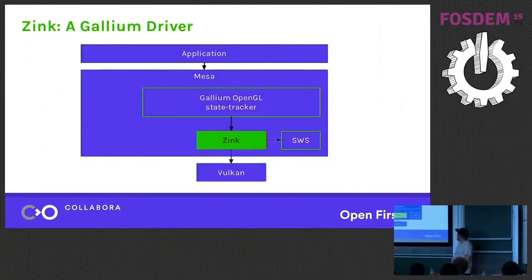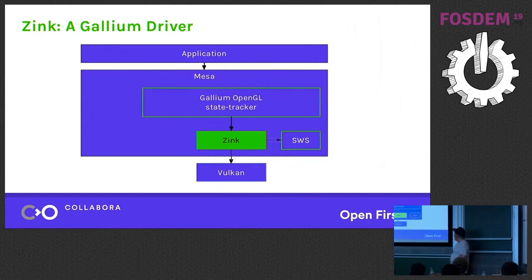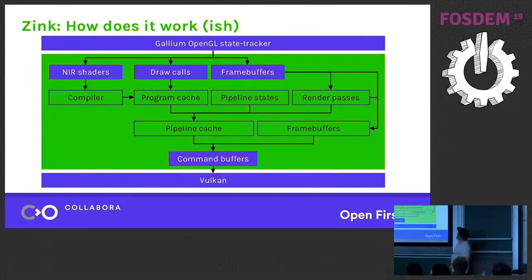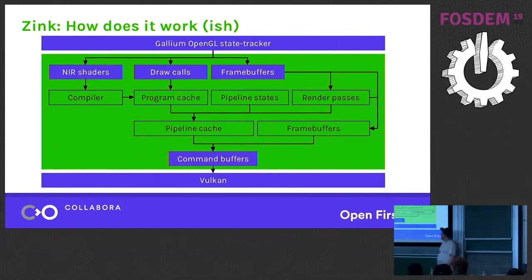So it's a Gallium driver. For those who don't know Mesa, Gallium is a system that takes OpenGL calls and translates them into a more low-level API. Zinc will take that and translate it to Vulkan and communicate with the windowing system — currently the software windowing system, which is not great; there's also a hardware DMA-based one as well. Here's a rough overview of the data flow of the driver: there's a compiler that feeds a program cache, and there's a pipeline cache that takes in render passes and creates framebuffers and feeds that into command buffers.